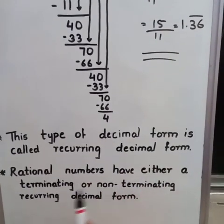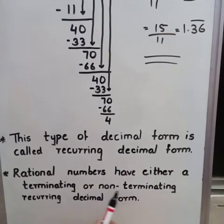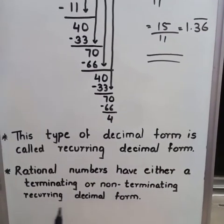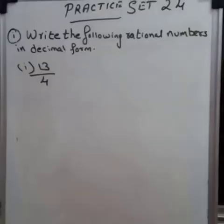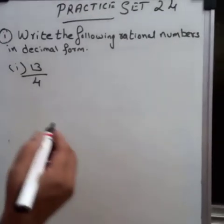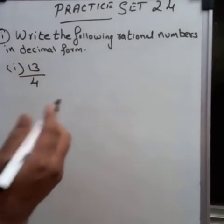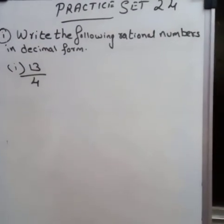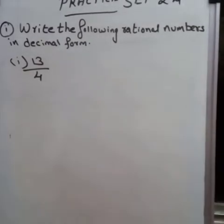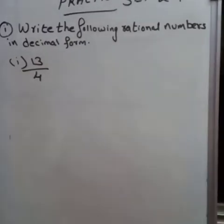Rational numbers have either a terminating or a non-terminating recurring decimal form. Now we are going to solve practice exercise 24: write the following rational numbers in decimal form.